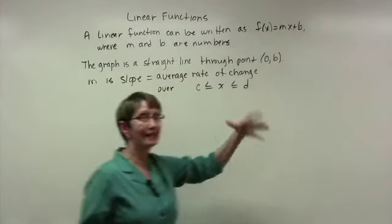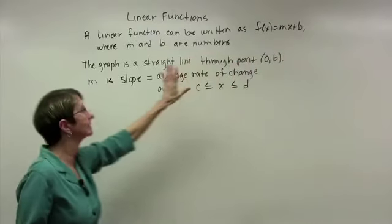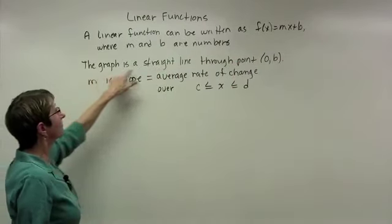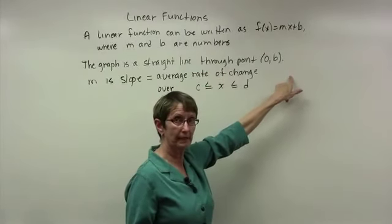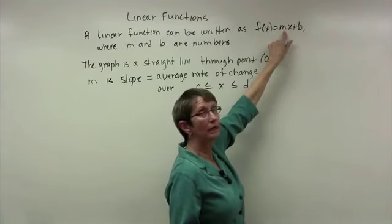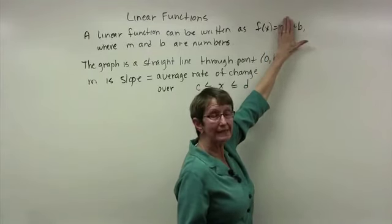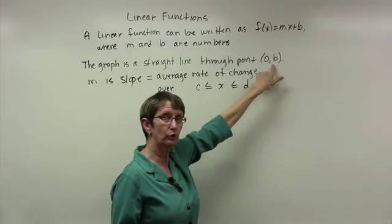The x stays the letter x, f(x) stays as f(x). The graph is a straight line through the point (0,b). So if x is equal to 0, m times 0 is 0, and we're left with f(x) equals b, or y equal to b.